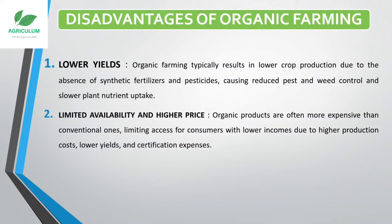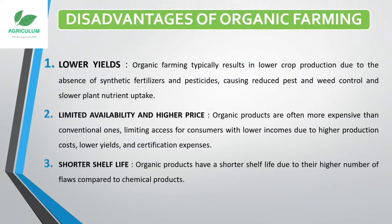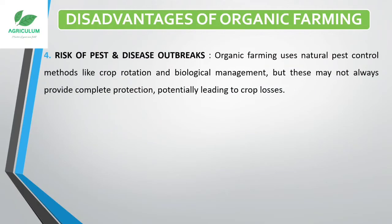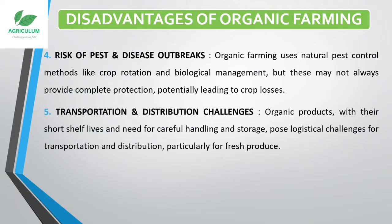The third disadvantage is shorter shelf life — organic products have a shorter shelf life due to a higher number of flaws compared to chemical products. With chemical products, shelf life can be extended, but organic products have a limited shelf life. The fourth is risk of pest and disease outbreak — organic farming uses natural pest control methods like crop rotation and biological management, but these may not always provide complete protection, potentially leading to crop losses.